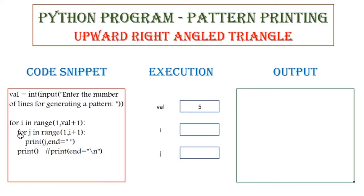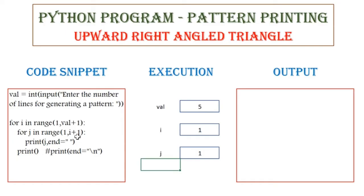Next, the control goes to the inner for loop where the variable j is going to get the range of values from 1 to i plus 1. The value of i currently is 1. The value of j is now 1, because j is going to hold the range of values from 1 to 1 plus 1, which is 2 — meaning range will exclude the stop value, so it is going to consider only 1. So we have i equal to 1 and j equal to 1, and we are going to print the value of j. The value of j is 1, so 1 gets printed in the output window.